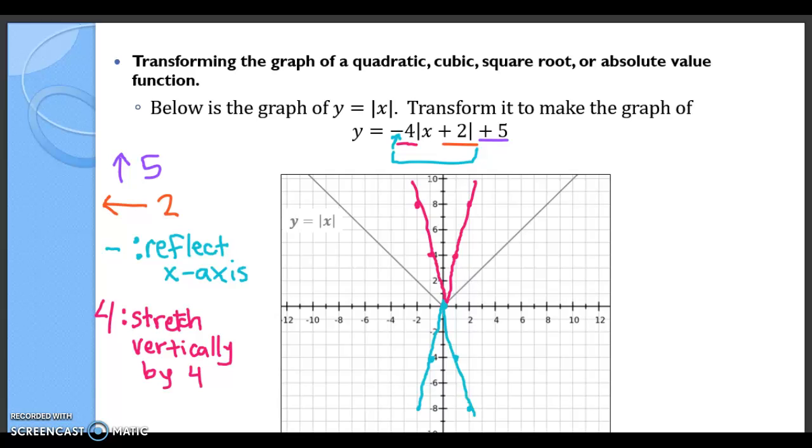But I'm not quite done yet. I'm going to erase my last pink step, and I'm going to do the next steps in one piece. So I'm going to add 2 and add 5 in one shot. So I need to go up 5: 1, 2, 3, 4, 5, and I need to go to the left 2: 1, 2.